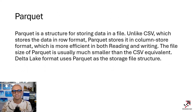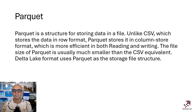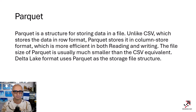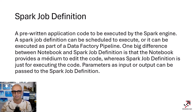Parquet file is a structure for storing data in a file. Unlike CSV, which stores data in a raw format, Parquet stores it in a column-store format, which is much more efficient. Parquet files are generally smaller than CSV files and much more efficient to read — helpful for analytics systems. Parquet is not a Microsoft-specific format, but Microsoft uses it in the Delta Lake structure in the Spark engine. All data is stored as Parquet files behind the scenes.